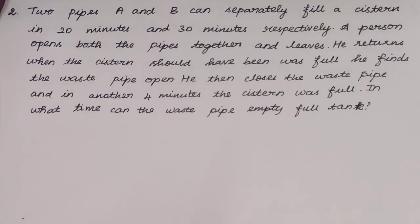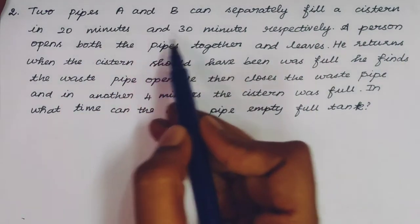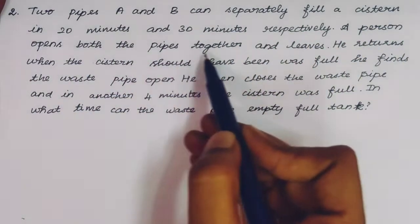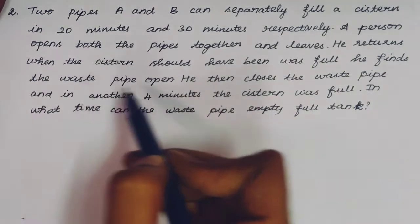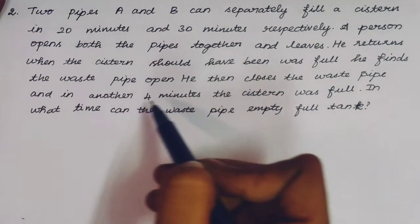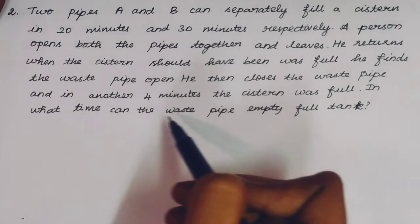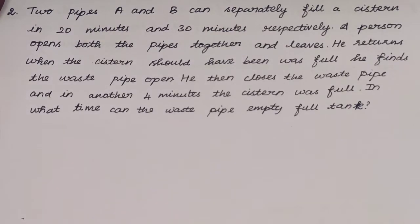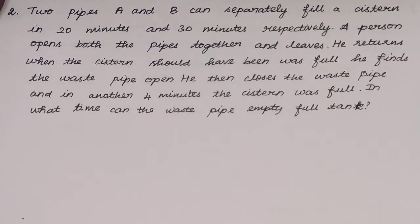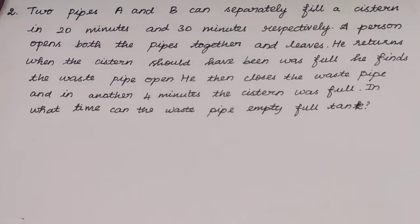Second question: 2 pipes A and B can separately fill a cistern in 20 minutes and 30 minutes respectively. A person opens both pipes together and leaves. He returns when the cistern should have been full. He finds that the waste pipe was open. He then closes the waste pipe and in another 4 minutes the cistern was full. In what time can the waste pipe empty the full tank? So: A fills in 20 minutes, B fills in 30 minutes. The person opens both pipes and goes away.